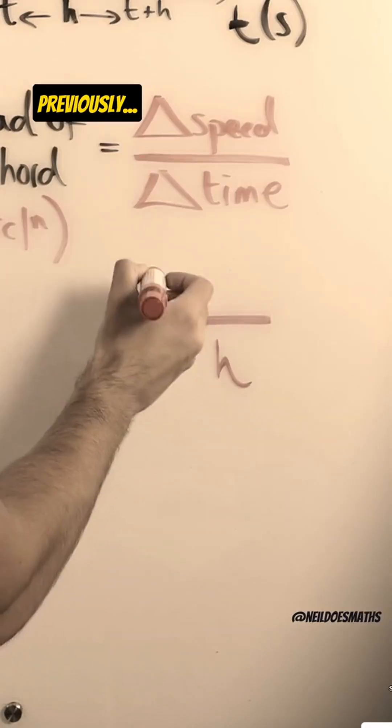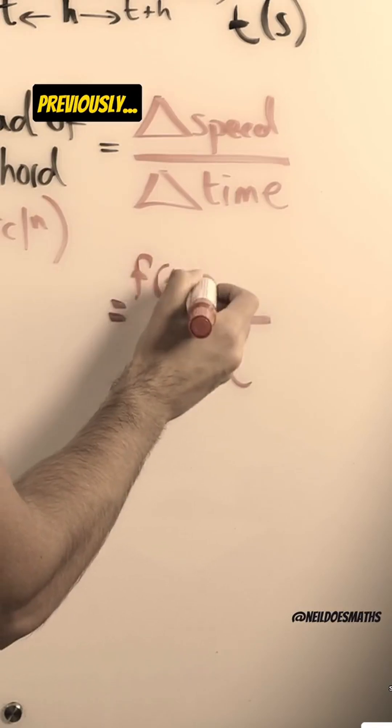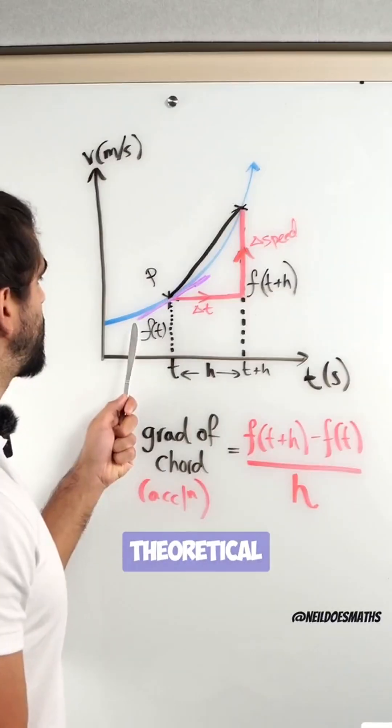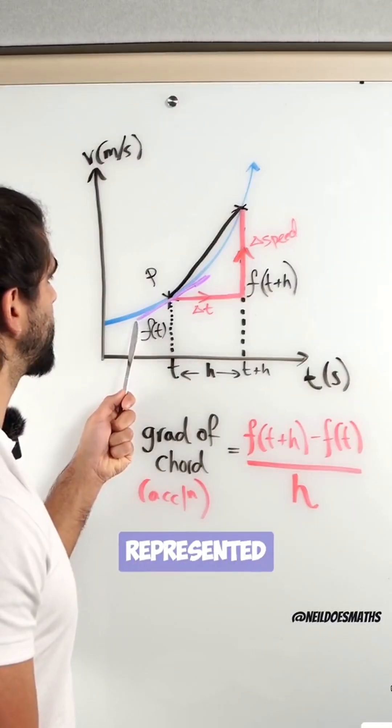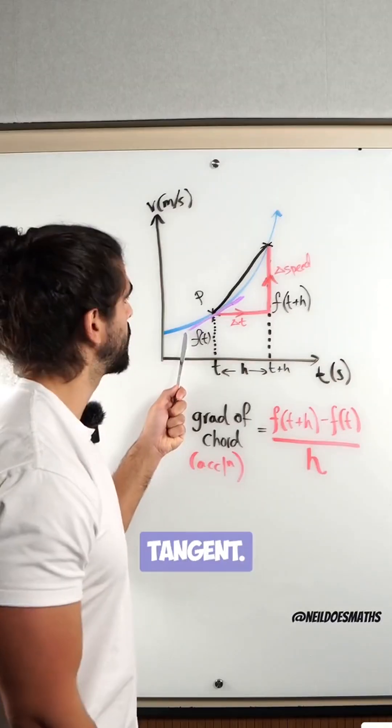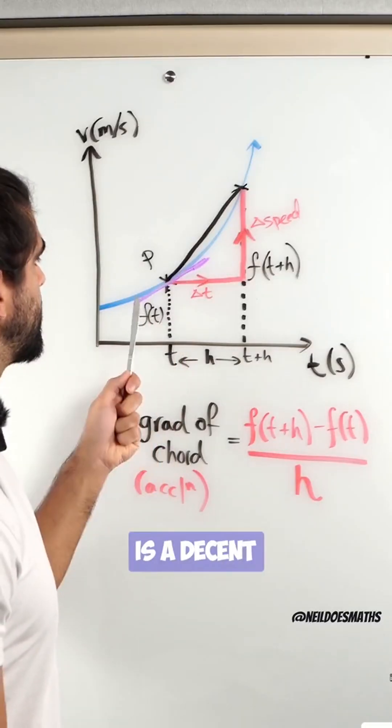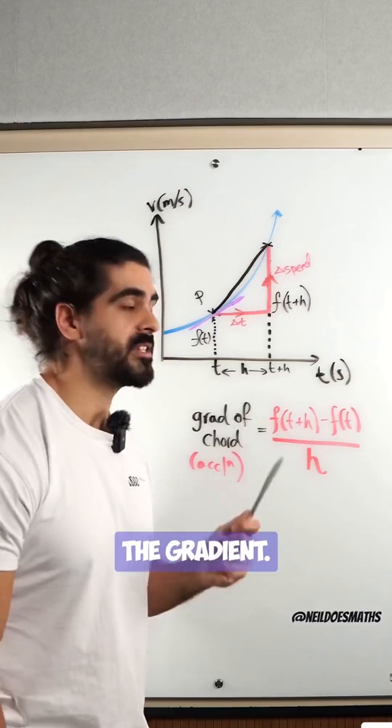So the change is just the subtraction of the two values. Let's just say that the actual theoretical gradient was represented by this tangent. You can see that the gradient of this chord is a decent approximation to the gradient.